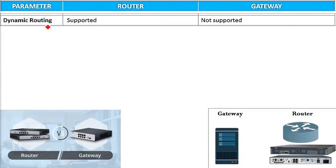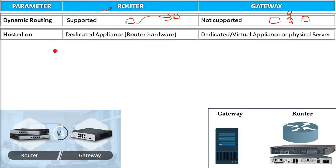On dynamic routing: the router is all about routes — sending packets along a path. Dynamic routing is supported by the router. The gateway does not support dynamic routing. The router knows the IP, knows the MAC, and sends accordingly. Router is hosted on a dedicated appliance — that is router hardware — and is mostly always on a dedicated hardware appliance.